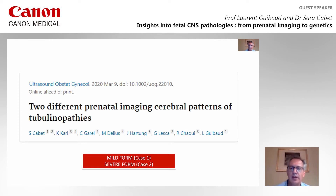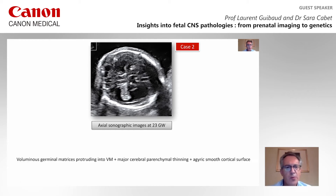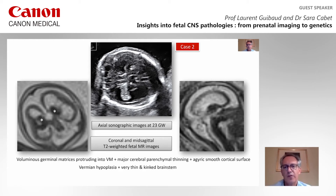We just published a paper about these two different prenatal imaging patterns of tubulinopathies. We just showed a mild form, and now let's show a severe form. These patients were referred at 23 weeks of gestation, and you can appreciate that there are two masses protruding in the ventricular system, which are voluminous germinal matrix. You can see that there is a very thin parenchyma and an agyric cortex. On the coronal view and mid-sagittal view of the infratentorial structure, there is dysgenesis and hypoplasia of the vermis, and a very thin brainstem.